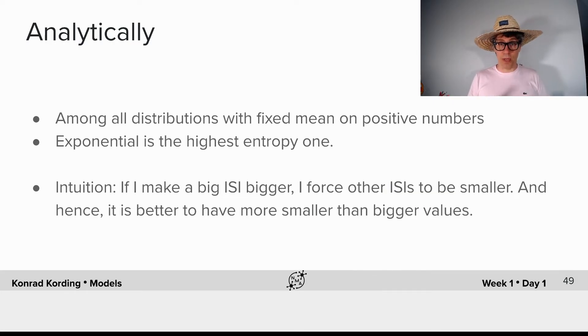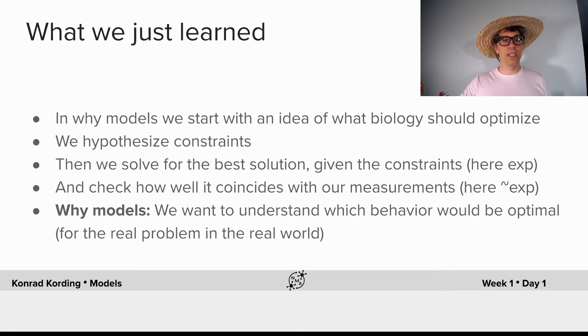So it's this trade-off between forcing the other interspike intervals to be small and allowing high entropy that leads to the exponential being the best solution. And hence it's better to have the distribution as we saw it there.